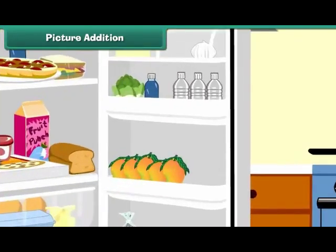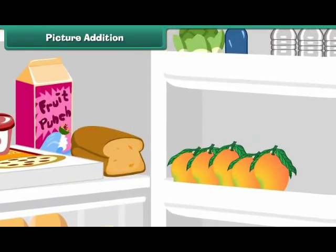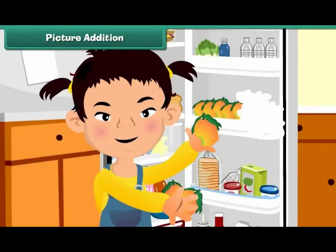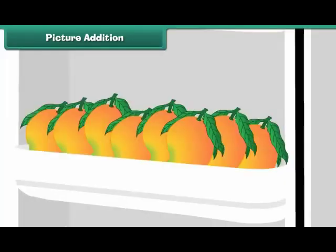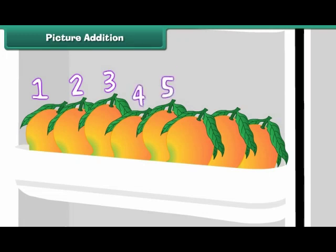There are five mangoes in the refrigerator. Shipra puts in three more. How many mangoes are there in the refrigerator? Counting: one, two, three, four, five, six, seven, eight. There are eight mangoes in the refrigerator.